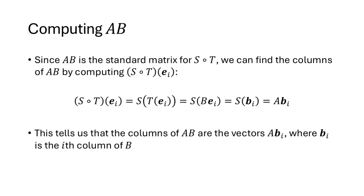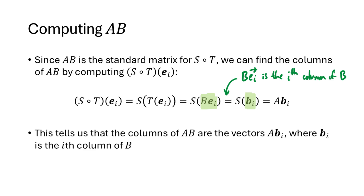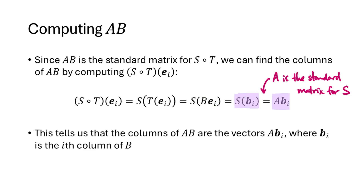To find the standard matrix, we evaluate the transformation at the standard basis vectors eᵢ. The i-th column of AB is S∘T(eᵢ) = S(T(eᵢ)) = S(B·eᵢ) = S(bᵢ) = A·bᵢ, where bᵢ is the i-th column of B. So the columns of the product matrix AB are obtained by multiplying A by each column of B individually.